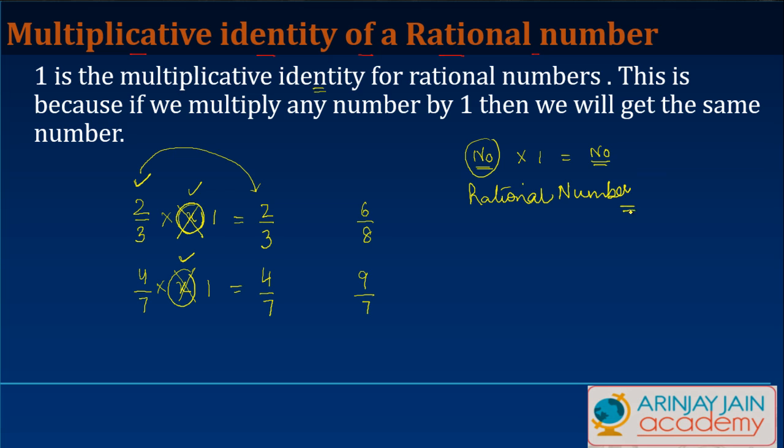That's the simple truth behind this. So 1 is the multiplicative identity for a rational number. This is because if we multiply any rational number by 1, we get the same number. So let's say 6 by 8, if I multiply it by 1, I get 6 upon 8.